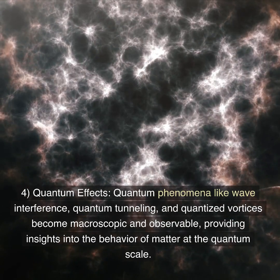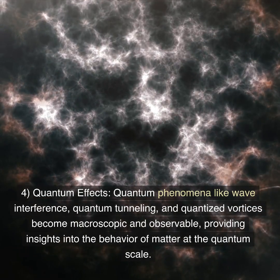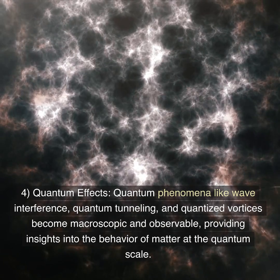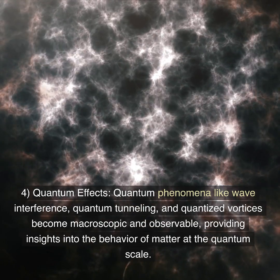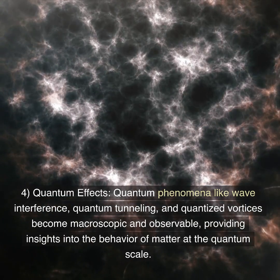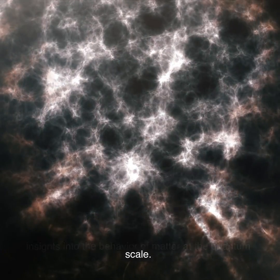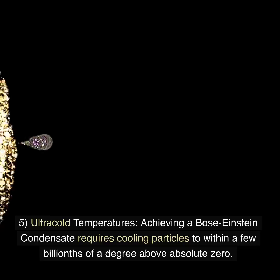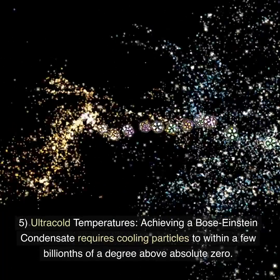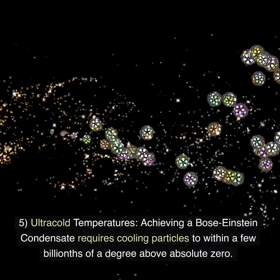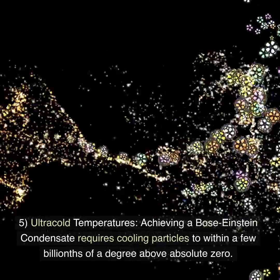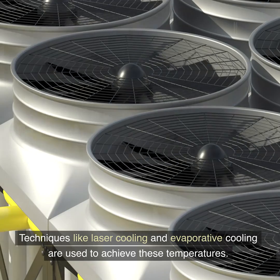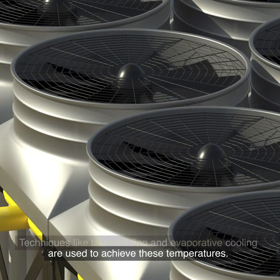Key characteristic 4: Quantum effects. Quantum phenomena like wave interference, quantum tunneling, and quantized vortices become macroscopic and observable, providing insights into the behavior of matter at the quantum scale. Key characteristic 5: Ultra-cold temperatures. Achieving a Bose-Einstein condensate requires cooling particles to within a few billionths of a degree above absolute zero. Techniques like laser cooling and evaporative cooling are used to achieve these temperatures.